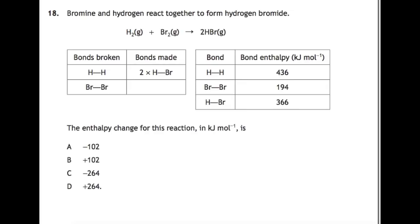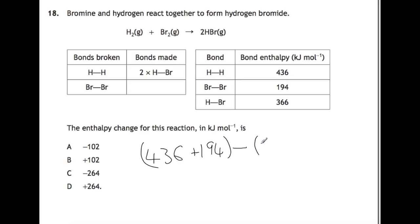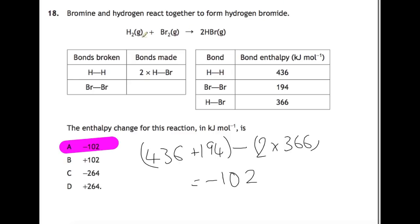Here we have a bond enthalpy question. For bond enthalpy questions, we add together all the bonds that are broken and then take away all the bonds that are made. For this one: 436 plus 194, minus 2 times 366, gives us negative 102. It's always bonds broken minus bonds made.